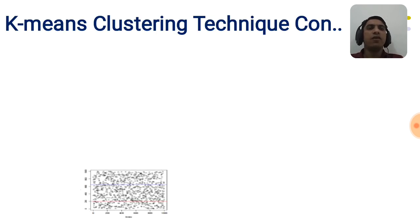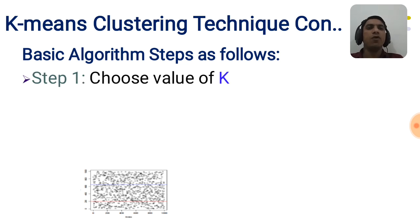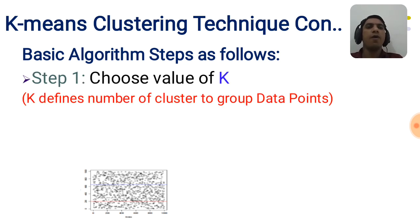The basic algorithmic steps for the k-means clustering technique are as follows. Step number one: choose the value of k, where k defines the number of clusters to group data points.